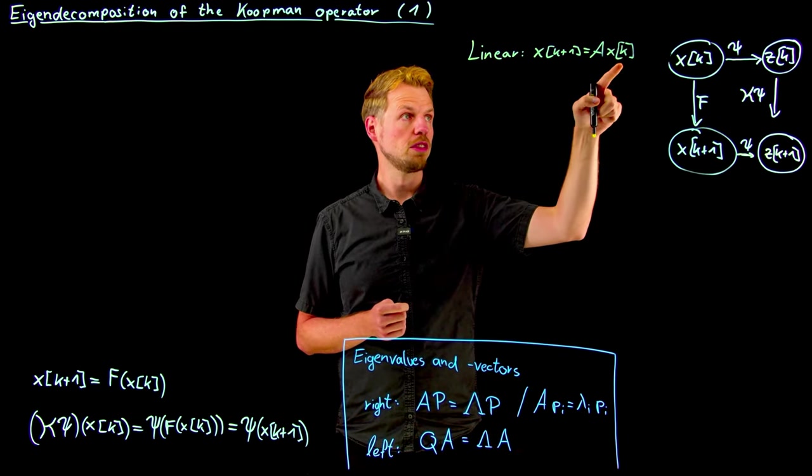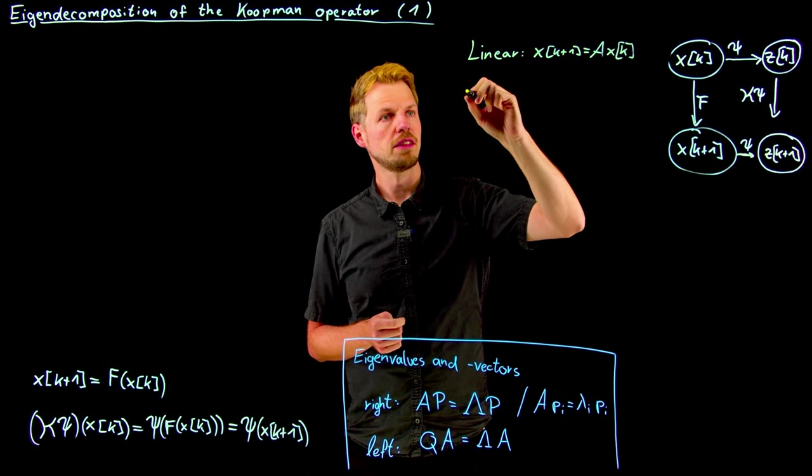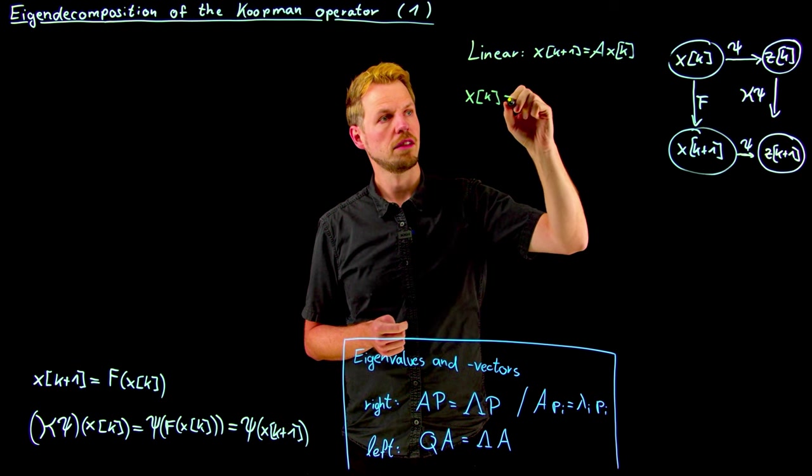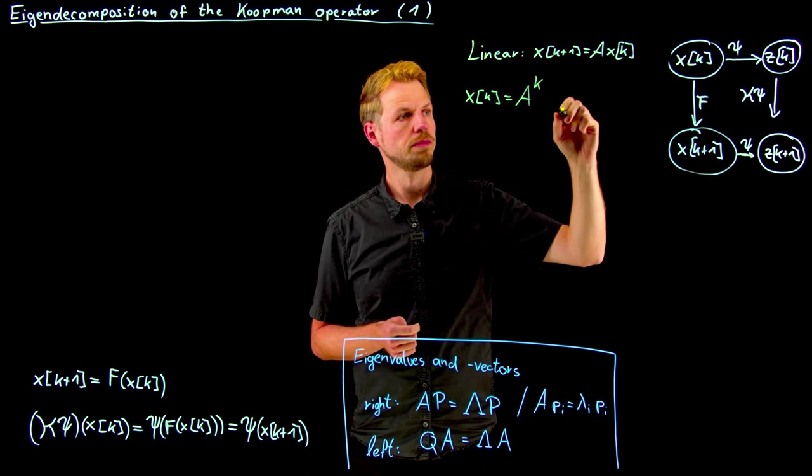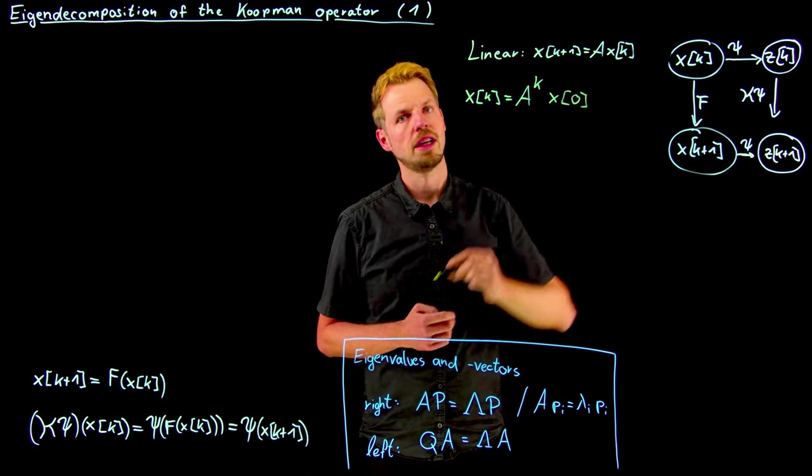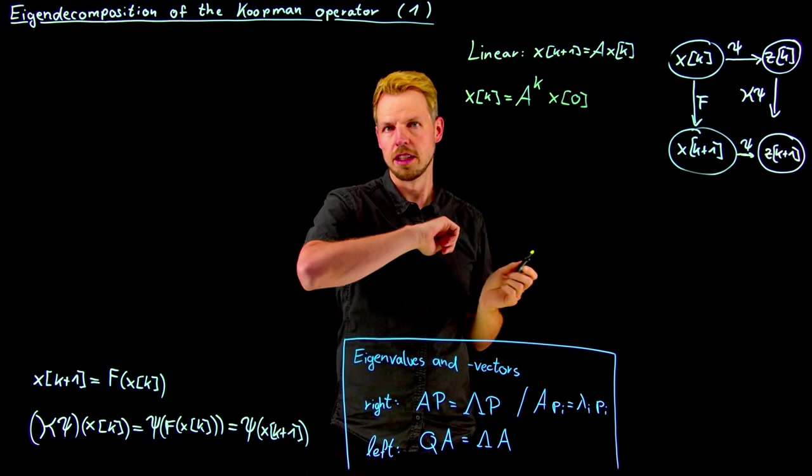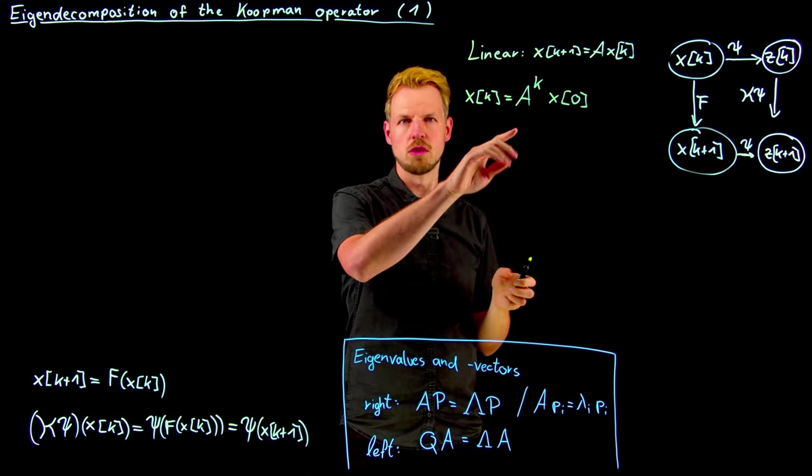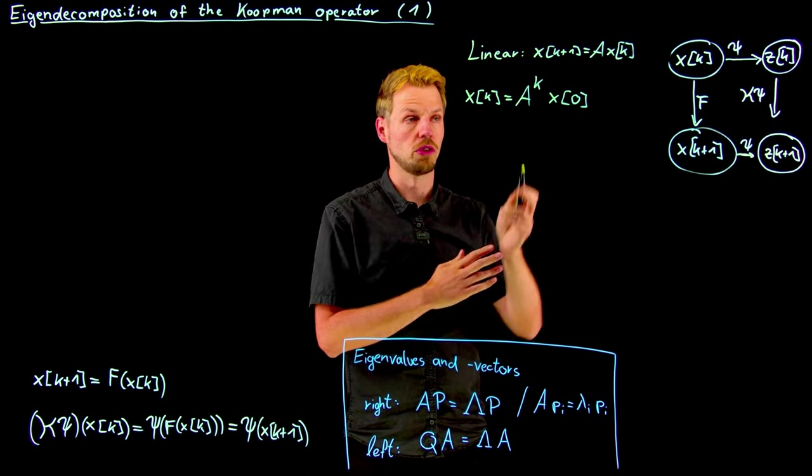And if we see this rule, this evolution, then we can simply say that the state at point k is x_k = A raised to the kth power times the initial state x_0. So we have gained nothing for now, but what we can do now is we can study the eigenvalue and eigenvector decomposition of our matrix A.